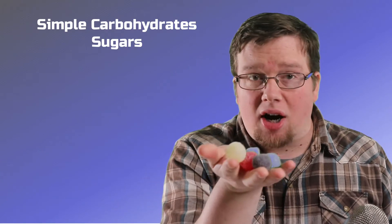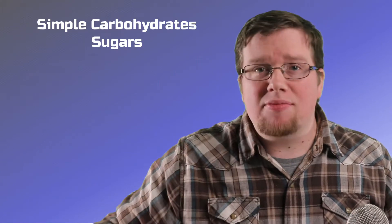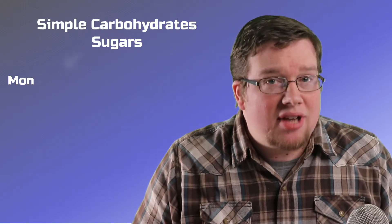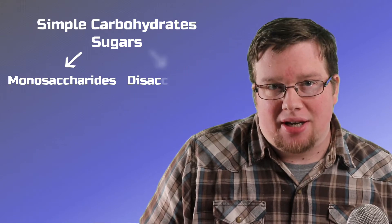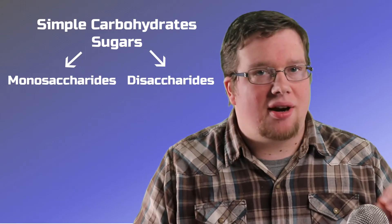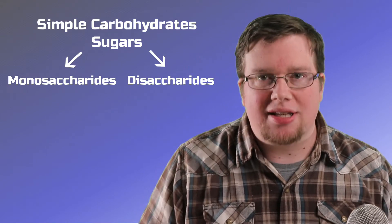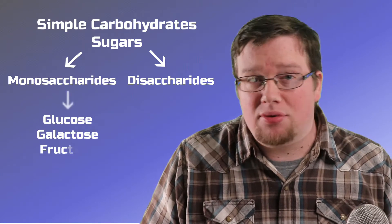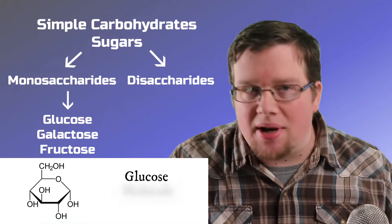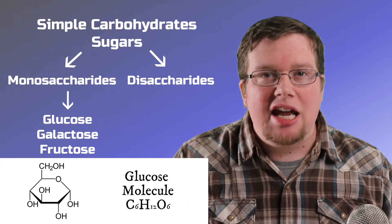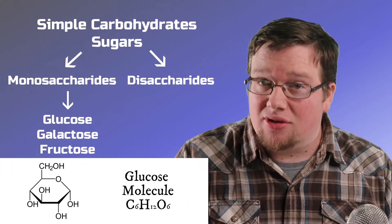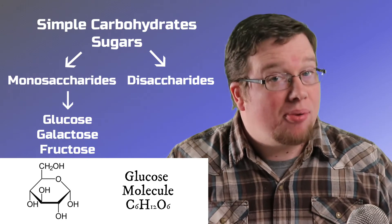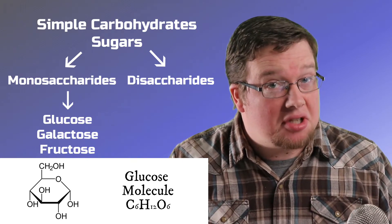Simple carbs are sugars, and they can be broken down further into two groups called monosaccharides and disaccharides. Monosaccharides are the simplest carbohydrates and contain sugars called glucose, galactose, and fructose. Glucose is the most abundant simple carb in the human body and is the body's preferred source of energy. Additionally, it's the main source of energy for our brains.